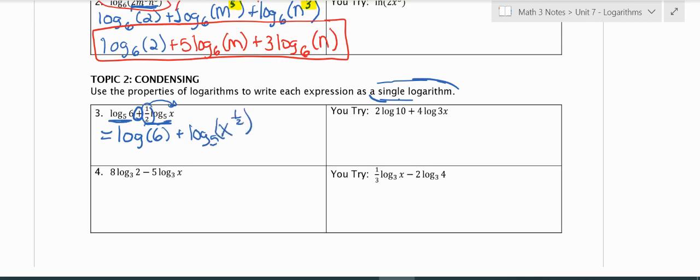If I'm going to do x to the 1/2, we saw in our radical unit that's a rational exponent. That's the same as doing the square root. So log base 5 of the square root of x. And now that we have each of these simplified, we can put them together. I could put them now in the same log as multiplication. And this would be my final answer.